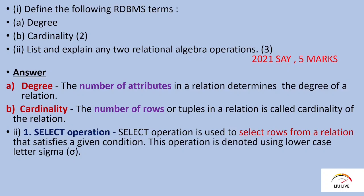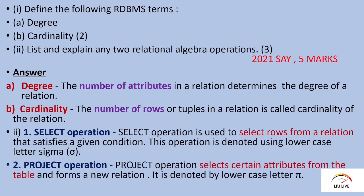The first operation is the select operation. The second one is the project operation. In the project operation, we select specific columns or attributes from one table. This is a 5-mark question.